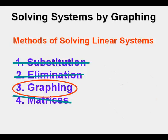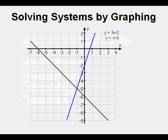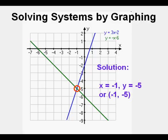Now, here is a more detailed sketch of a system of equations. Here you have a green line and a blue line, and the point where they intersect is the solution. And that solution is x equals negative 1, y equals negative 5, or negative 1 comma negative 5.